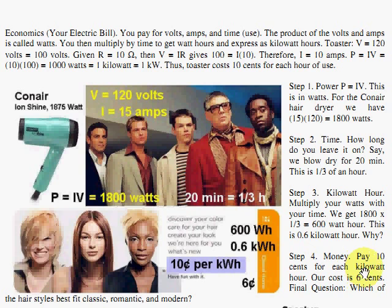Step 4 is money. You have dime for a thousand watt hours. Kilo means a thousand. So I have 600, I have six tenths. So the answer is six cents.